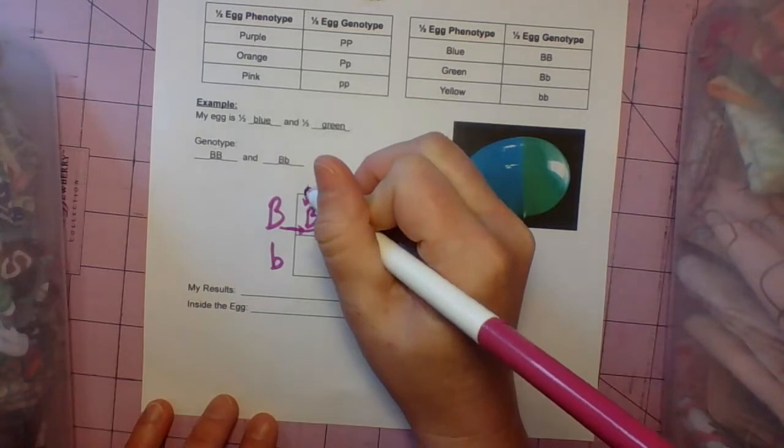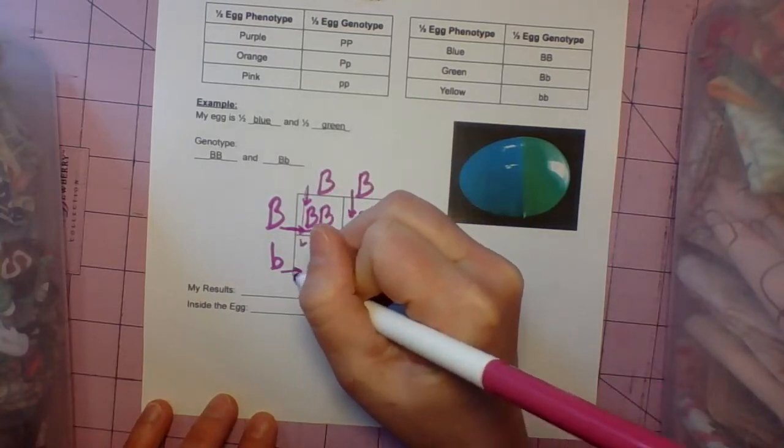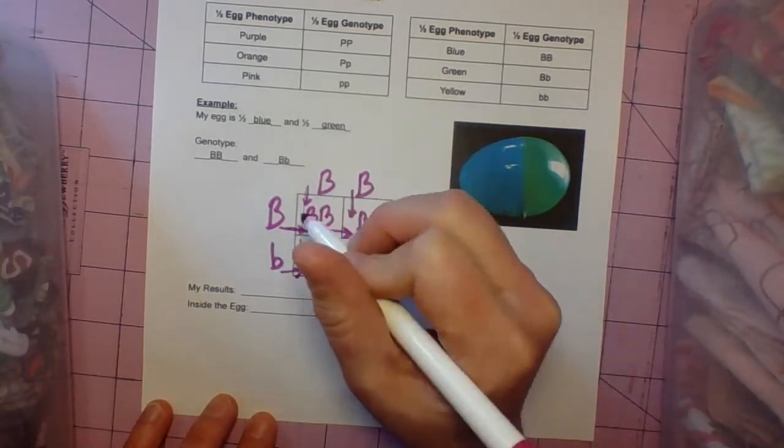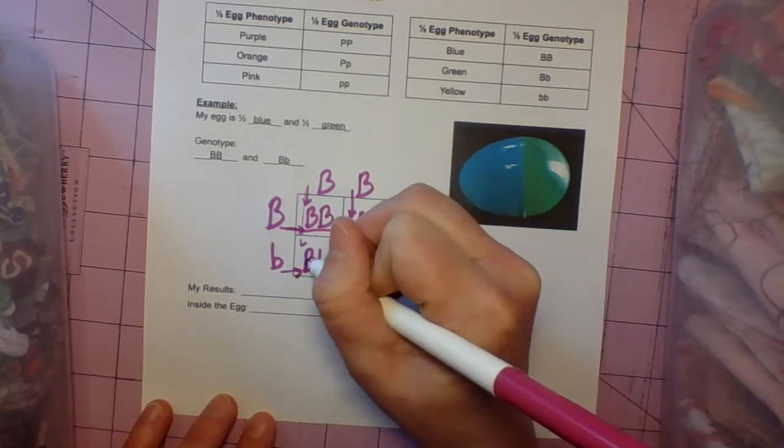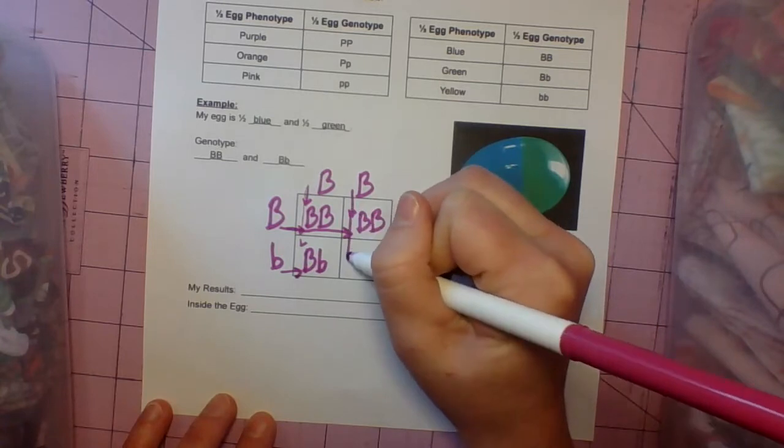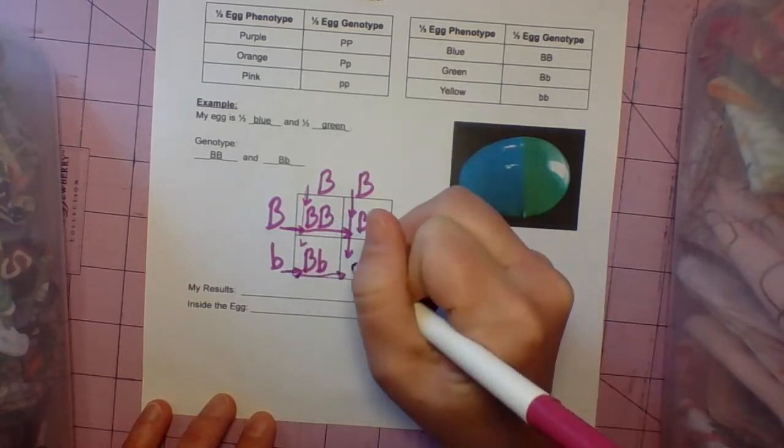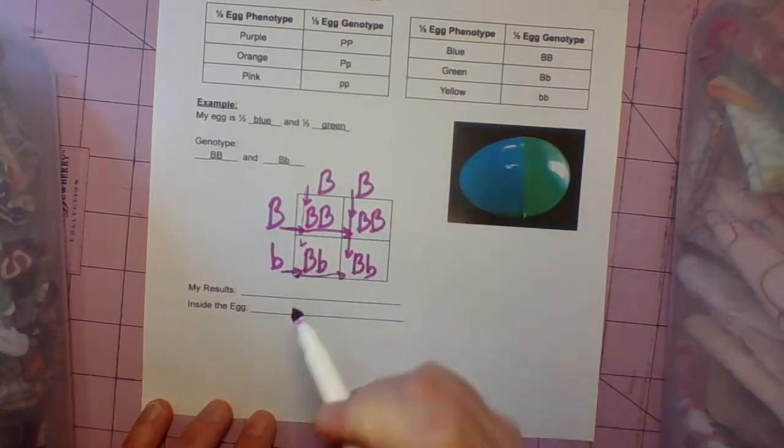This big B comes down. This little b comes over. Remember, if there's a big and a little, you always write the big first. So it's big, little. Same for this one.